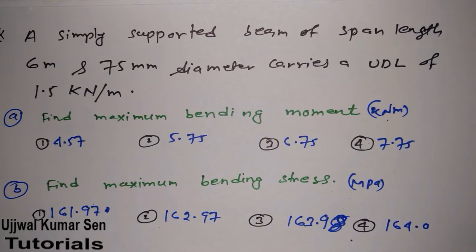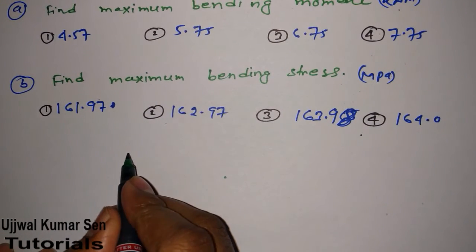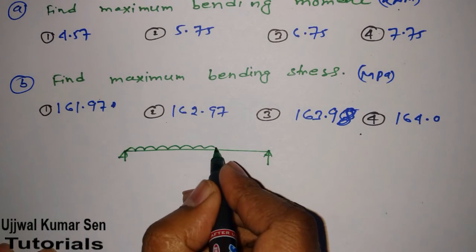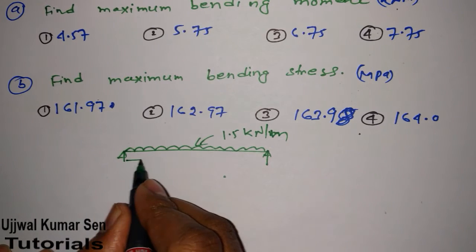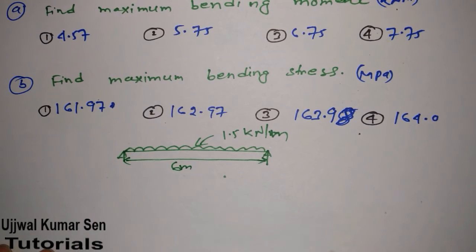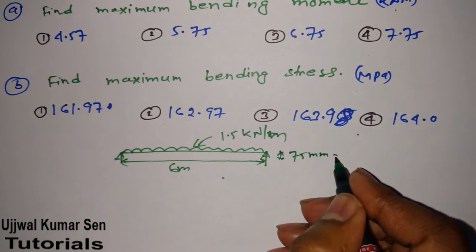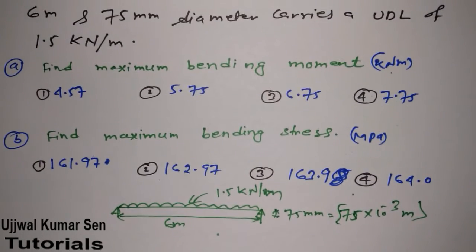Looking at the question: a simply supported beam of span length 6 meters and 75 mm diameter carries a UDL. Let's draw the diagram. This is a simply supported beam carrying a UDL load of 1.5 kilonewton per meter, with a span of 6 meters. The diameter of this beam is 75 mm, which in meters is 75 × 10⁻³ meters.